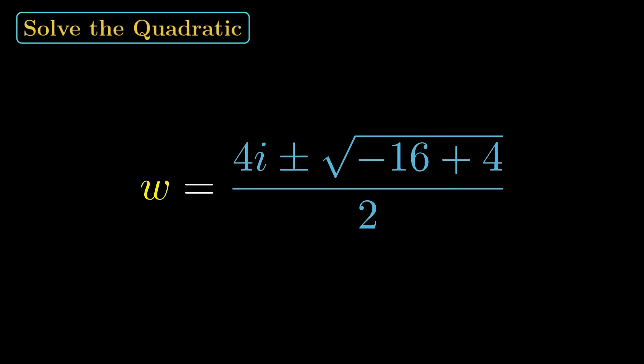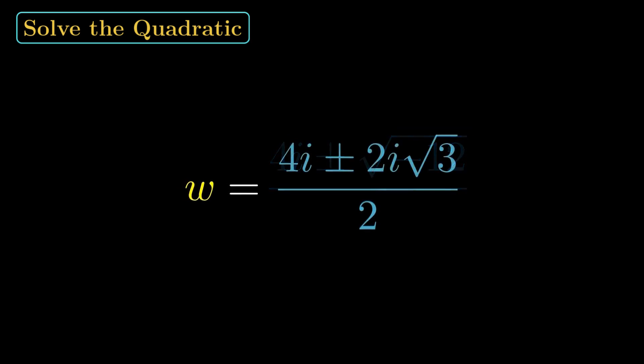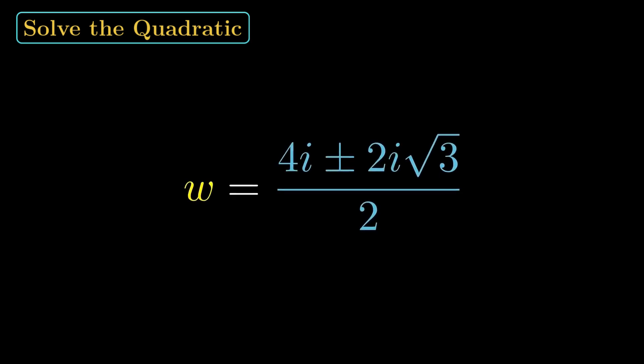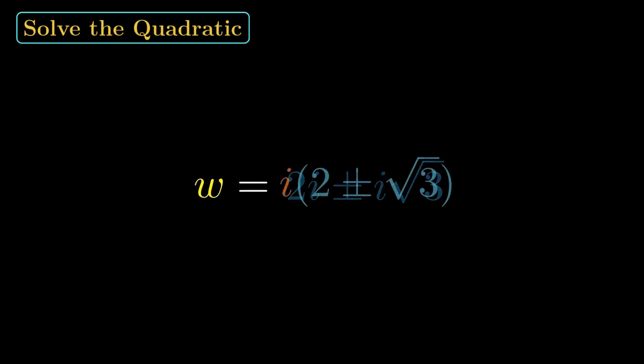Negative 16 plus 4 is negative 12. So we have w equals 4i plus or minus square root of negative 12 over 2. Now square root of negative 12 is 2i square root of 3. That gives w equals 4i plus or minus 2i root 3 over 2, divide by 2, w equals 2i plus or minus i root 3. And the cleanest form is w equals i times 2 plus or minus the square root of 3.